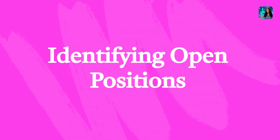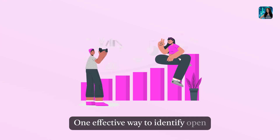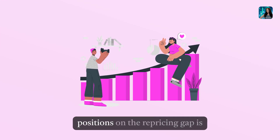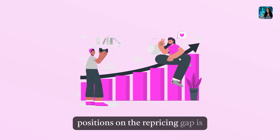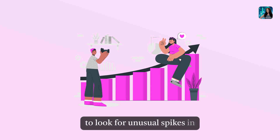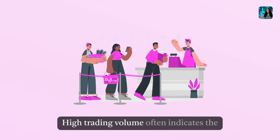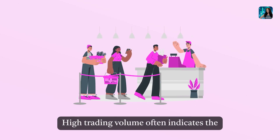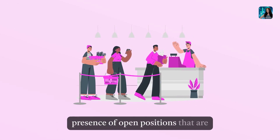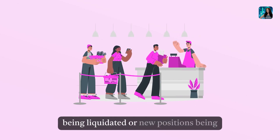Identifying open positions: one effective way to identify open positions on the repricing gap is to look for unusual spikes in trading volume at the market open. High trading volume often indicates the presence of open positions that are being liquidated or new positions being established.